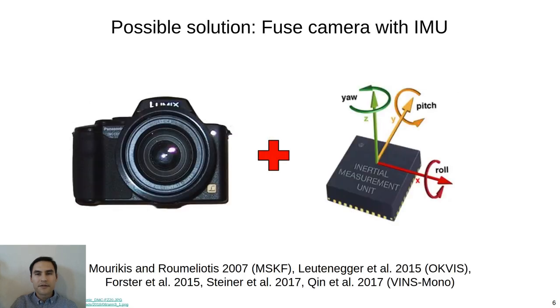One possible solution is to fuse the monocular camera with an additional sensor, such as an inertial measurement unit, or IMU. Although many impressive results have been achieved using this approach, visual inertial fusion has significant drawbacks.